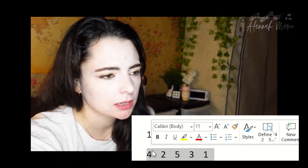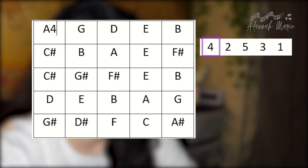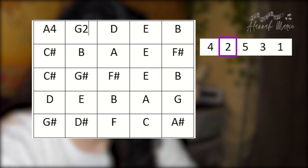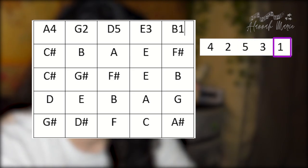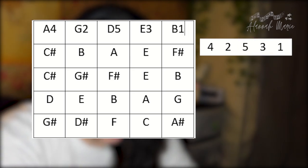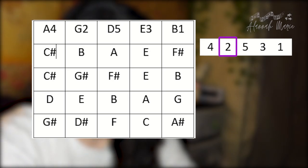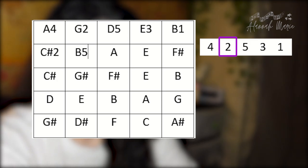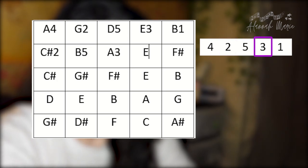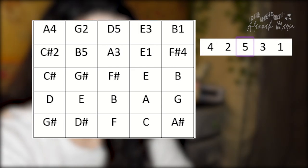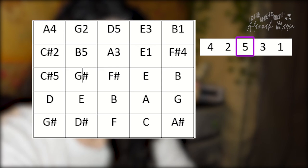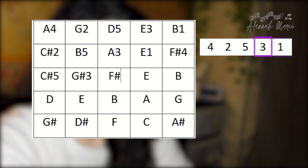So he would add these to the square: A4, G2, D5, E3, B1. And then you've got to add these to the rest of the square. He starts with the second one, so instead of starting at four he starts with two, keeping the same order: two, five, three, one, back to four. Then you start with the third number: five, three, one, four, two.